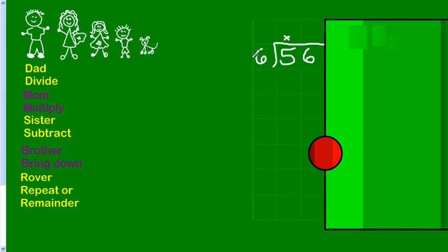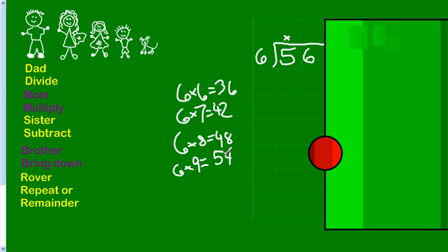How many 6s in 56? Well, let's see. 6 times 6 equals 36. No, I can probably do more than that. 6 times 7, that's 42. Maybe I can get closer. 6 times 8, that's 48. I'm getting closer. 6 times 9? I hope this works. 54? Yeah, that's good.